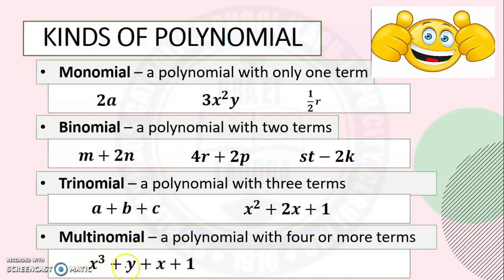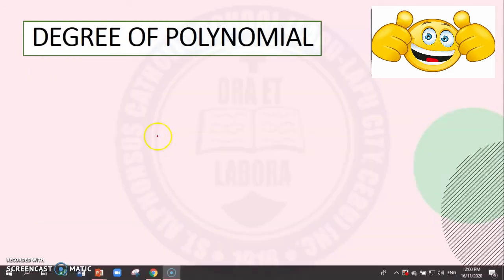The four terms are x cubed, y, x, and 1. And we have another example: y cubed plus y squared minus y plus 14.